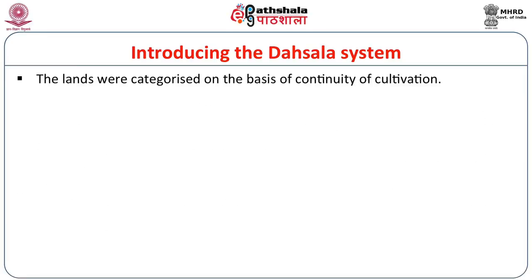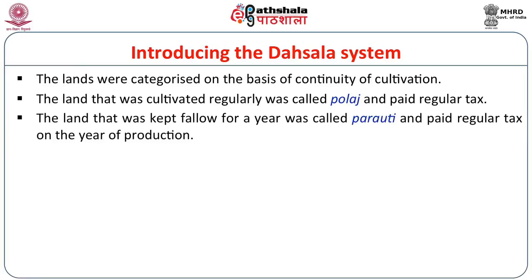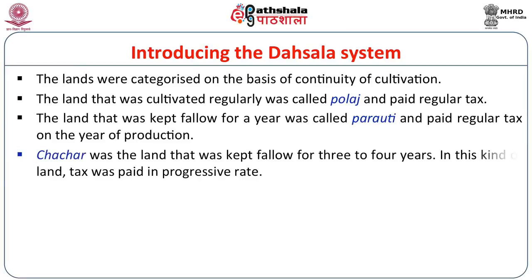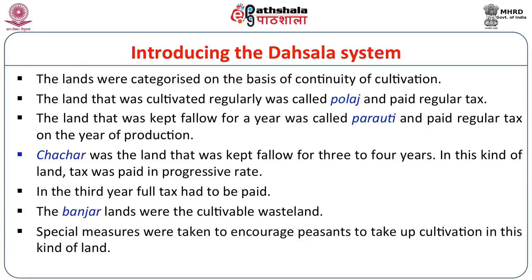The lands were categorized on the basis of continuity of cultivation. Land cultivated regularly was known as polaj and paid regular tax. Land kept fallow for one to three or four years paid tax at a progressive rate, with full tax due in the third year. The banjar lands were cultivable wastelands. A special measure was taken by the state to encourage peasants to cultivate this banjar land, and at times the taqavi or agricultural loans were also given to them. Tax was collected regularly from the fifth year.